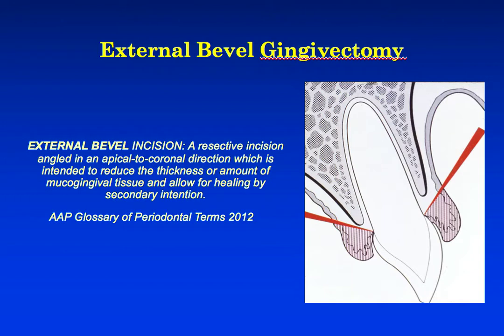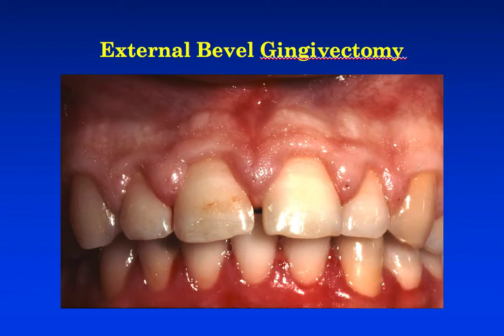Now, in a few modules back, we reviewed the term external beveled gingivectomy — this is the traditional gingivectomy incision. An external beveled incision is an apical-to-coronal directed incision in order to reduce the thickness of the tissues. Looking at this in a clinical case, we'll walk through the steps of the external beveled gingivectomy procedure.